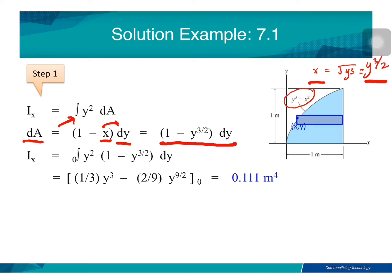Because we now have everything in Y, we must remember the limits are 0 and 1. You can solve the integration and get the answer. The moment of inertia about the X axis, IX, is equal to 0.11 meter to the power of 4.